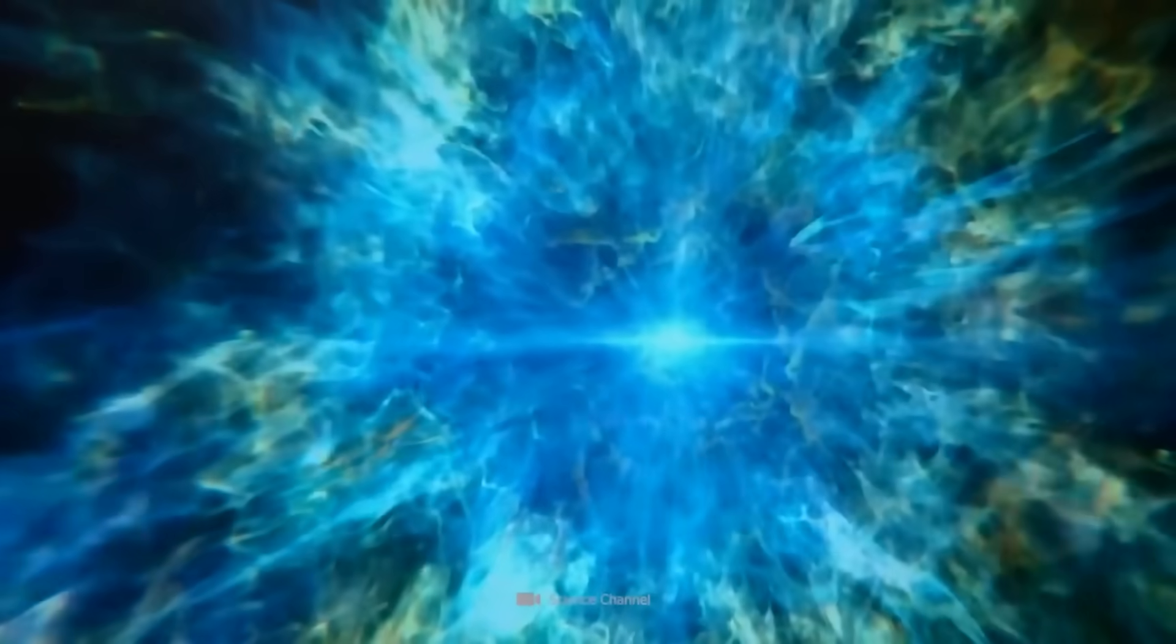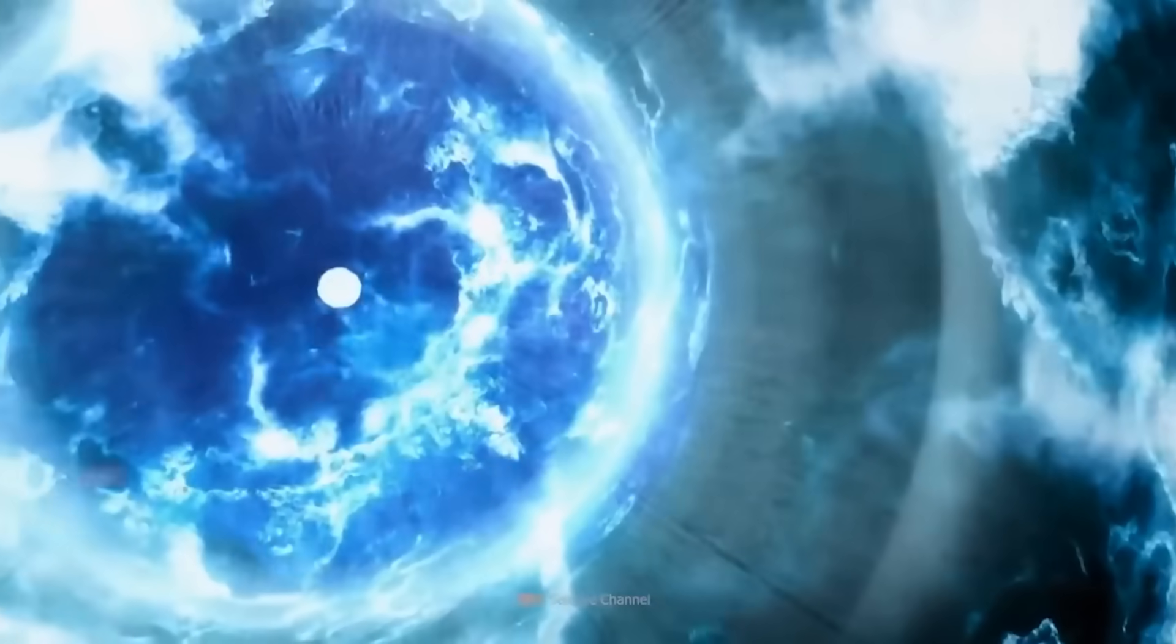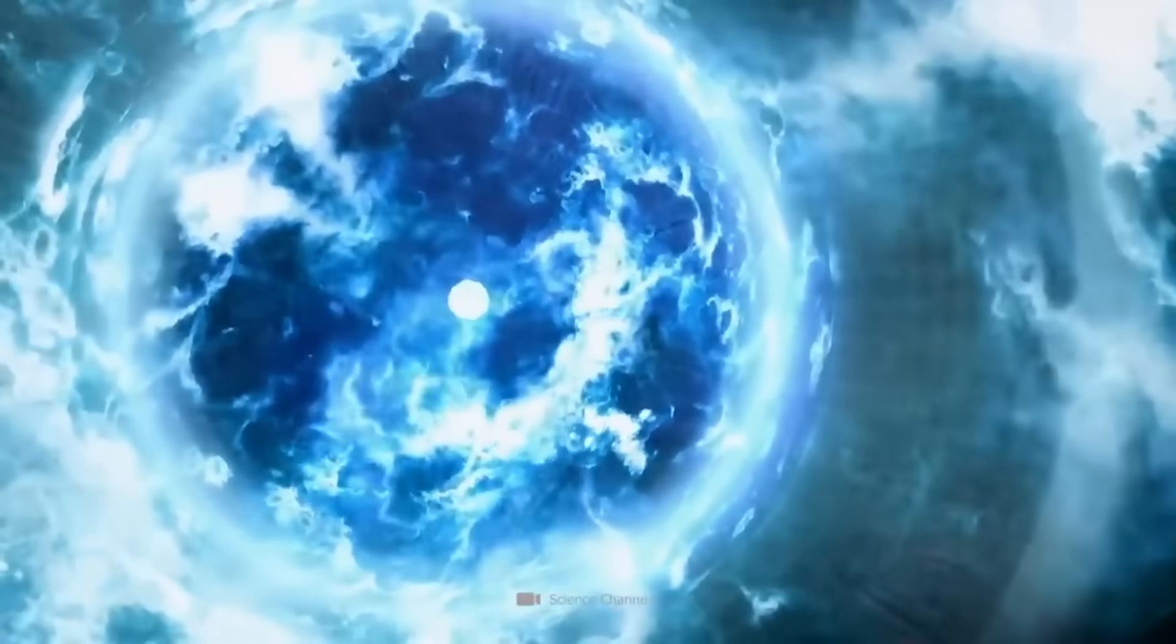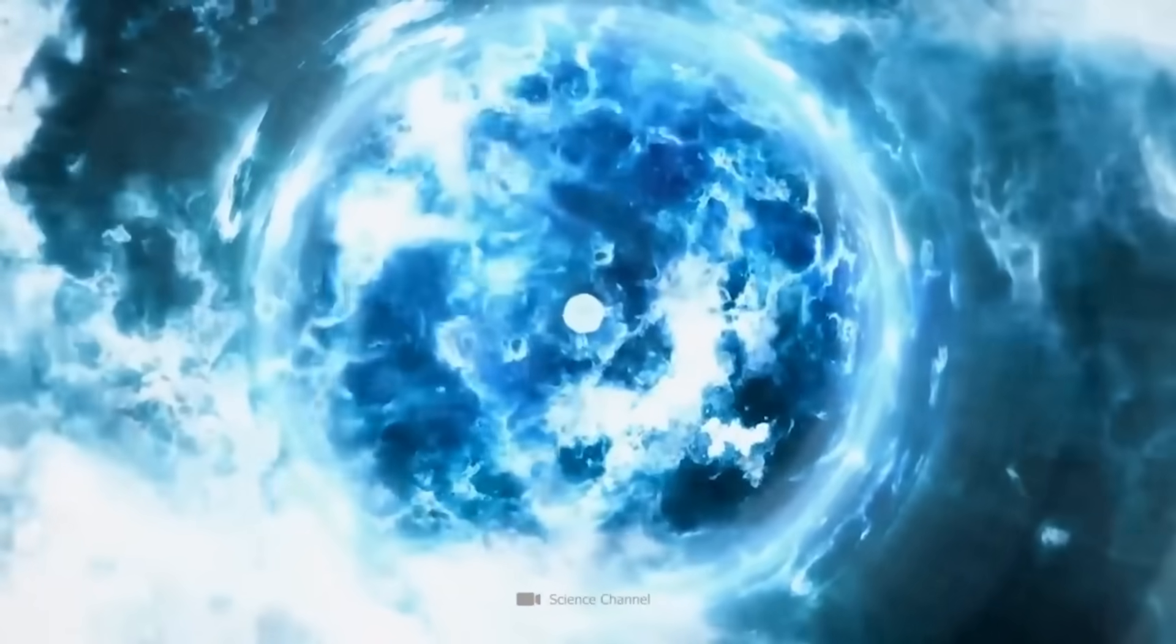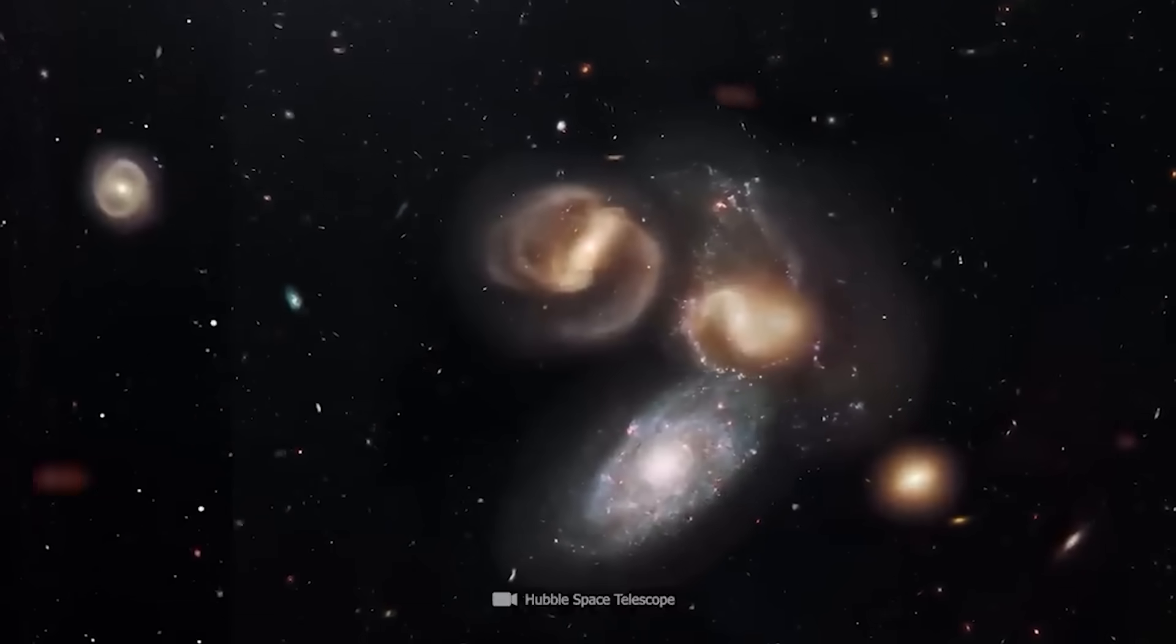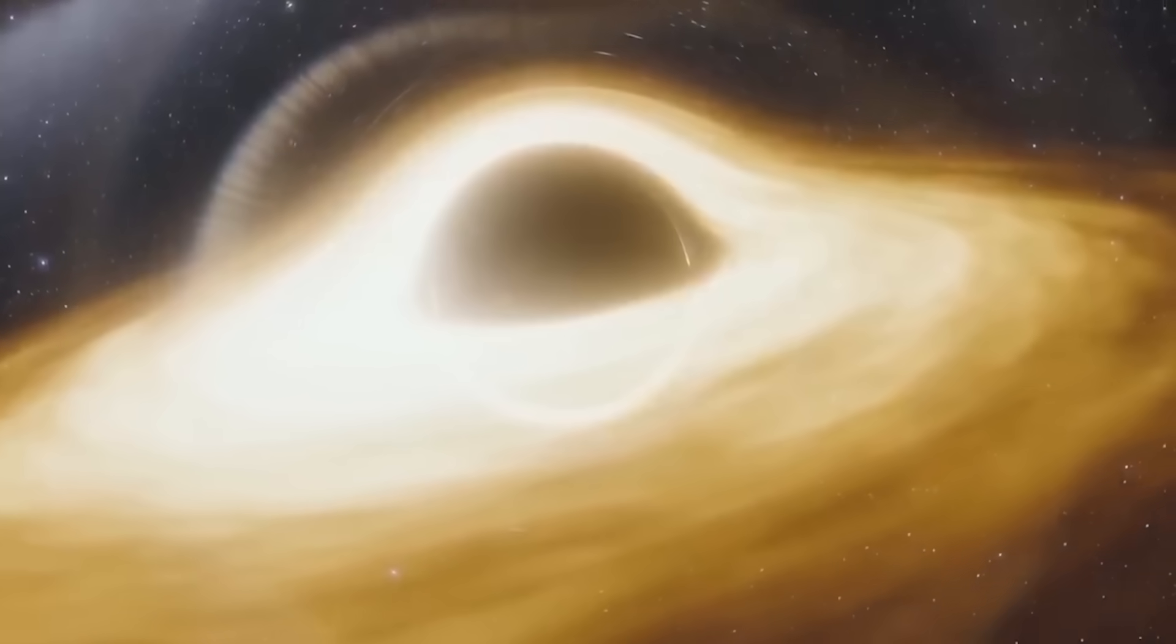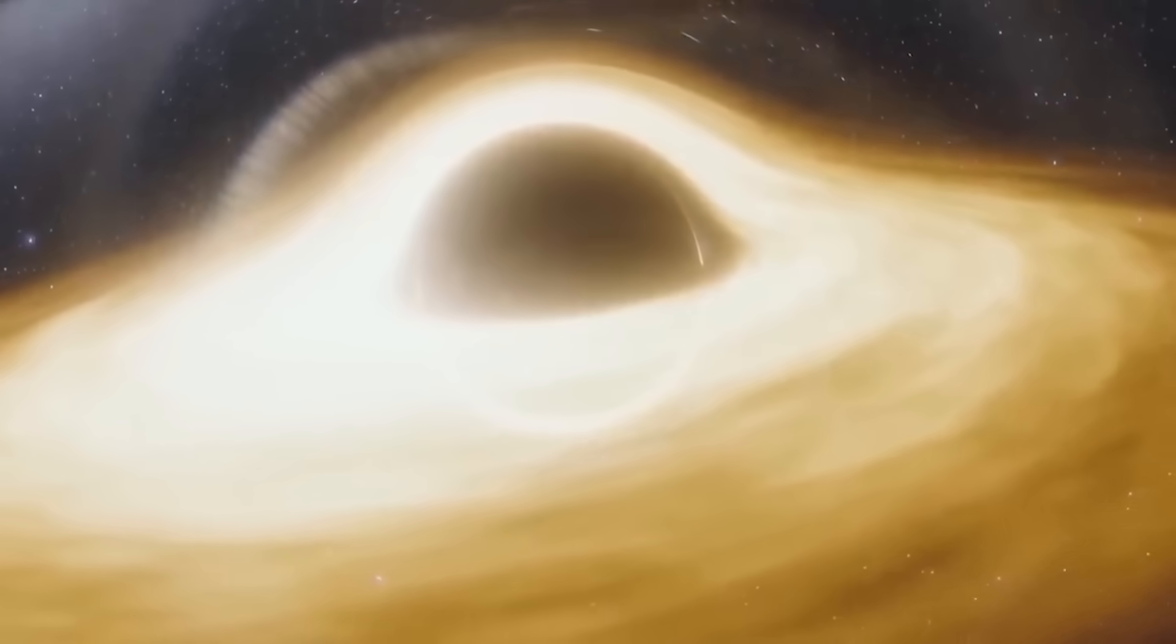According to prevailing theories, our universe emerged from a minuscule point approximately 13.8 billion years ago, a singularity that emerged from a state of perfect equilibrium due to a tiny irregularity. This singularity eventually evolved into the universe as we know it today. Interestingly, remnants of this original point can still be found within black holes in our universe.